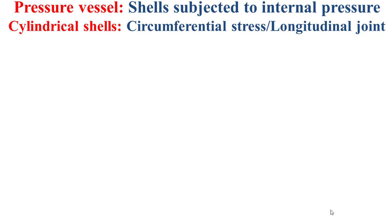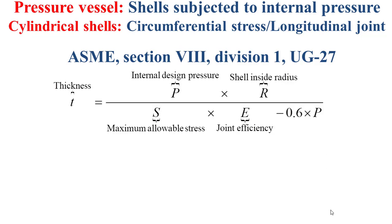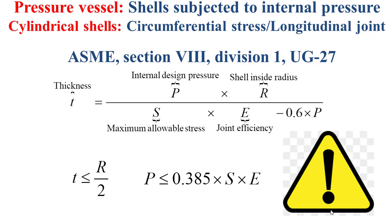Now we move to the sizing of the cylindrical shells when the stress state is dominated by the circumferential stress — the hoop stress — so the welded joints should be longitudinal. In this case, based on ASME Section 8 Division 1, UG-27, the thickness of the cylindrical shell is obtained by the formula shown in this slide, where P is the internal design pressure, R is the shell inside radius, S is the maximum allowable stress, and E is the joint efficiency. This formula is valid only when the thickness does not exceed half of the internal radius and the pressure does not exceed 0.385 × S × E.